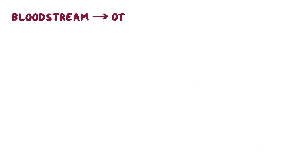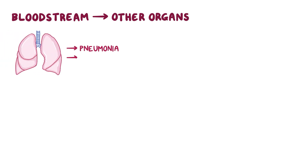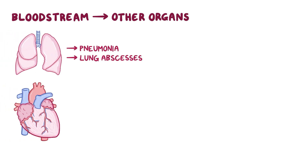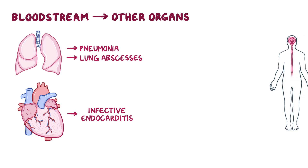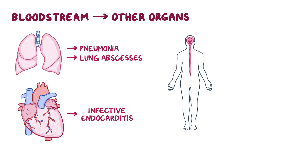From the bloodstream, strep pyogenes bacteria can spread to other organs like the lungs, causing pneumonia or lung abscesses, or the heart, where they form clumps called vegetations on the heart valves, causing infective endocarditis. Alternatively, if they spread to the central nervous system, they can cause brain abscesses or meningitis.